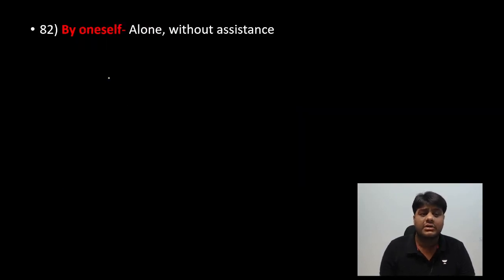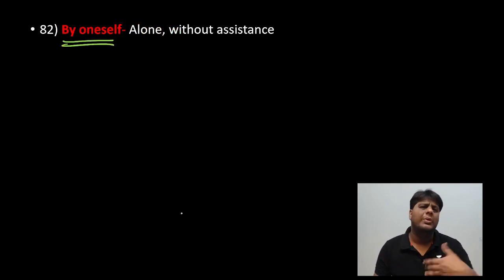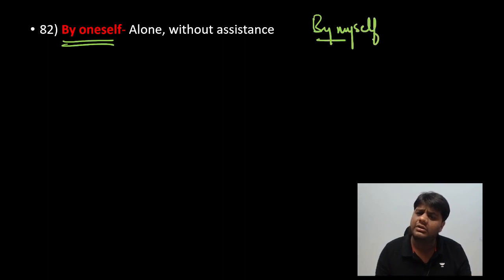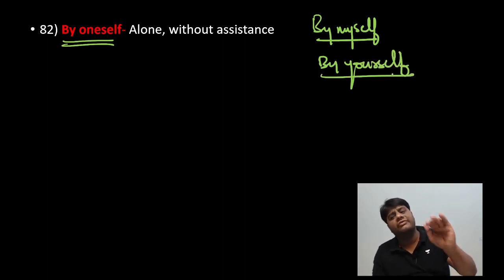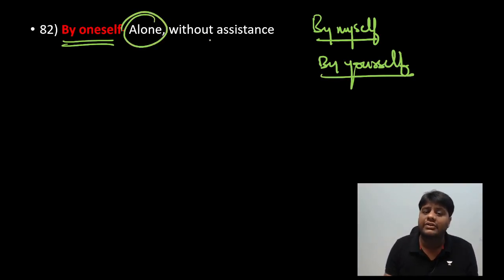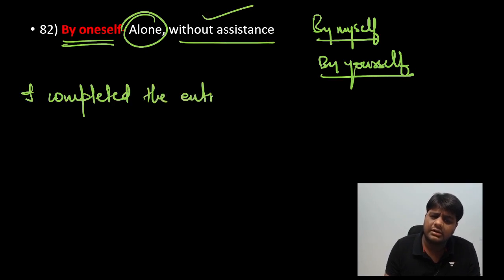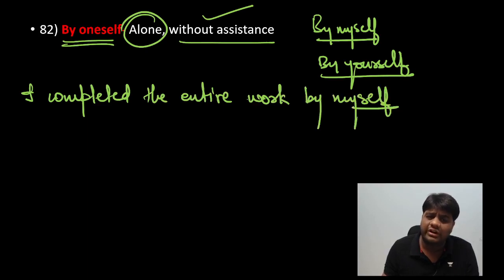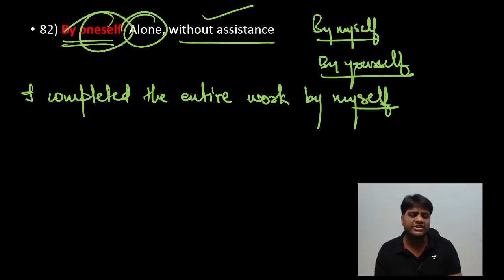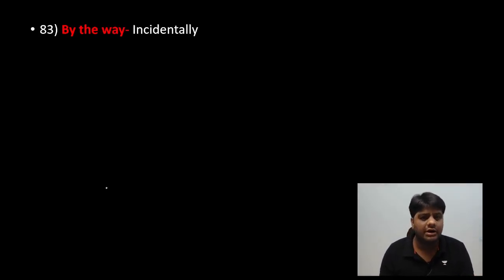Next idiom: 'by oneself.' For example — 'I completed it by myself,' 'you will do it by yourself.' This is a phrasal combination meaning alone or without assistance. 'Oneself' changes with the subject — myself, yourself, himself, etc. For example: 'I completed the entire work by myself.'